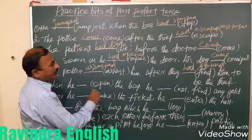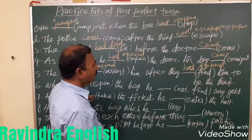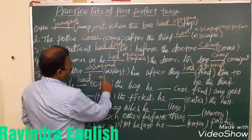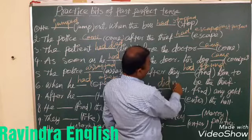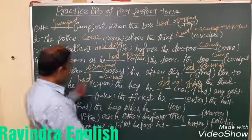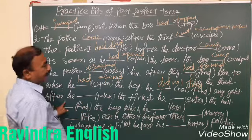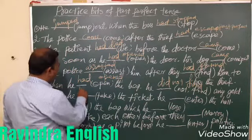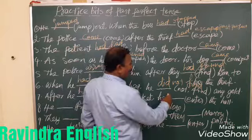When he opened the bag, he did not find any gold. After he took the ticket, he entered the hall. The correct form: 'After he had taken the ticket, he entered the hall.' — 'Had taken' is past perfect, 'entered' is simple past.